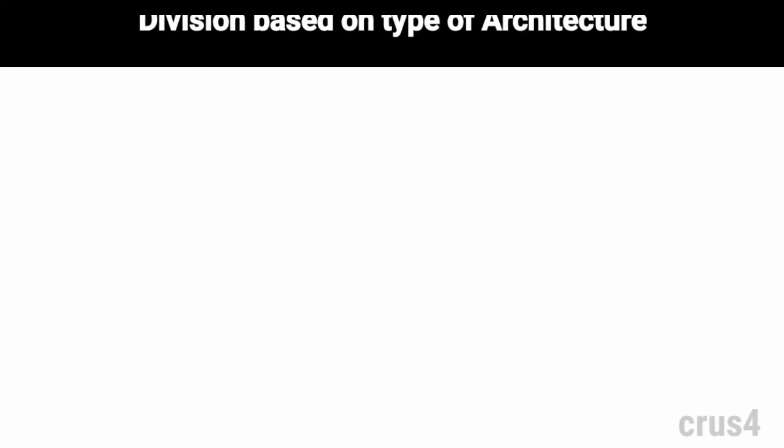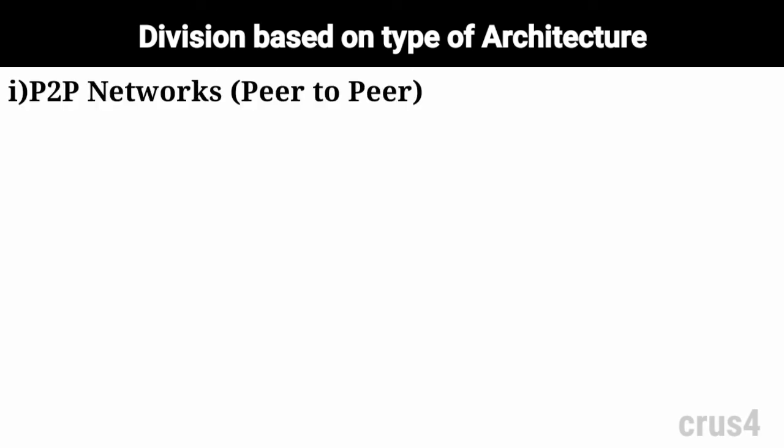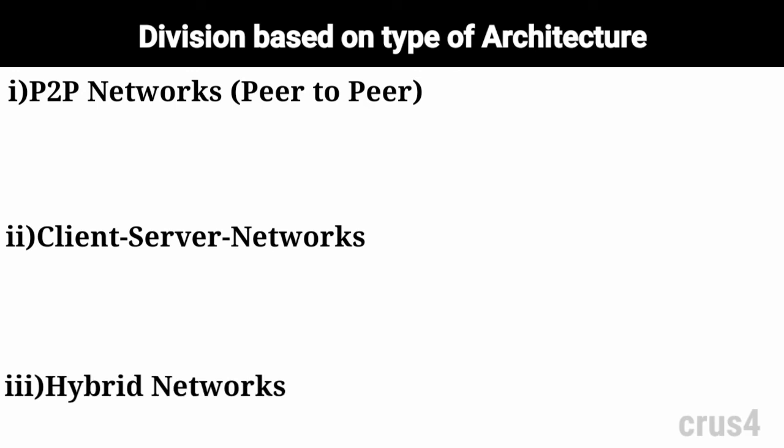Now let's discuss division based on type of architecture. This division has three basic types: P2P networks (peer-to-peer networks), client-server networks, and hybrid networks.